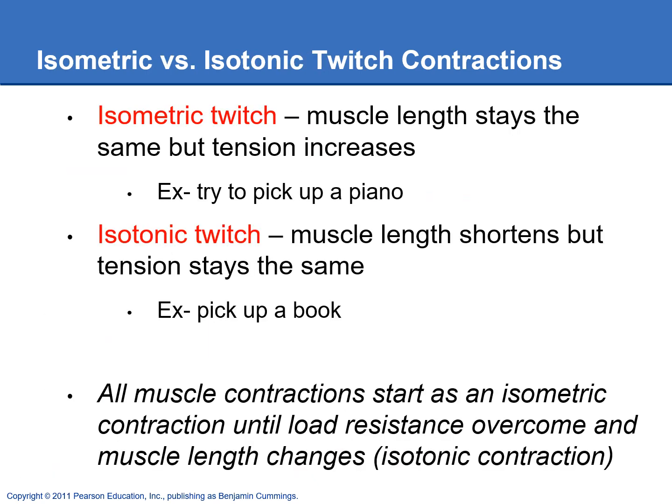There are two different types of muscle twitches, so make sure you know this for the exam — this is really important. First, we have an isometric twitch. If you look at the name, 'iso' means the same and 'metric' means length. This means that the muscle length stays the same, but the tension or force is going to increase.